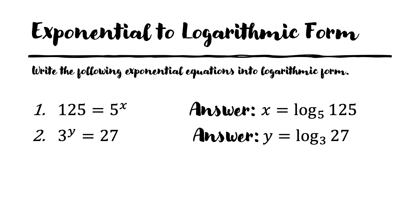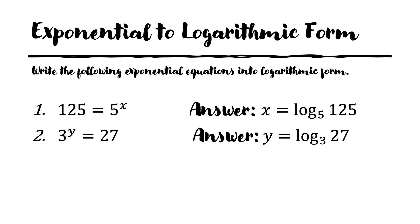Here are the basic properties of logarithmic functions. Log of 1 base b equals 0, and it doesn't matter what b is, well as long as b is greater than 0 not equal to 1. Log of b to the power of x base b equals x. Now let's use the basic properties of logarithms to evaluate some logarithmic expressions.